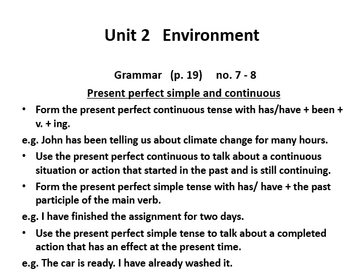As for the second tense, the present perfect continuous: since the word 'continuous' is clear, it is formed by 'have' or 'has' plus 'been' plus the main verb with '-ing.' For example: 'John has been telling us about climate change for many hours.' We use the present perfect continuous tense to talk about a continuous situation or action that started in the past and is still continuing up till now.